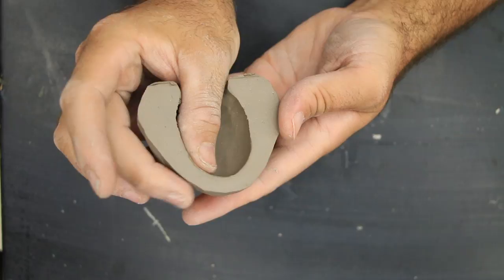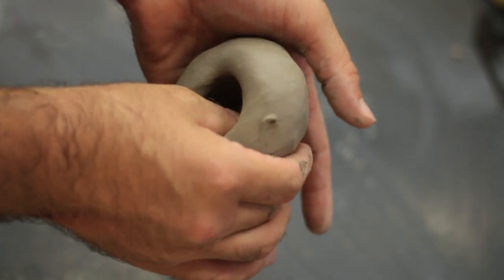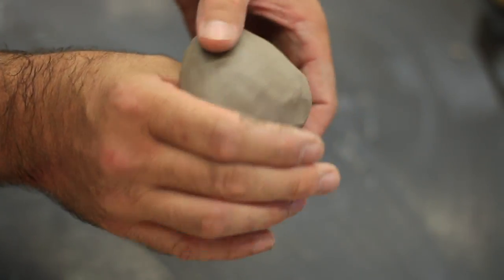If you begin by pinching up too high, then later on the pot will be too big and you won't be able to get your hand down at the bottom. So concentrate on the bottom first. Keep rotating and pinching it as you go.